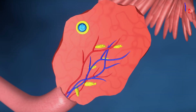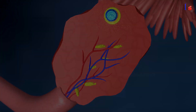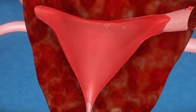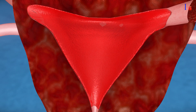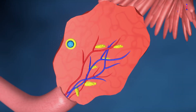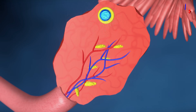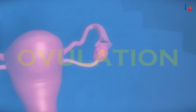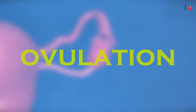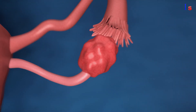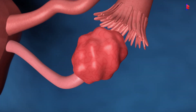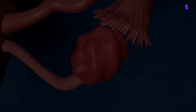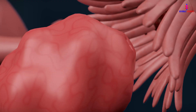In the follicular phase, one of the follicles becomes dominant and continues to grow. These follicles release estrogen, which stimulates the thickening of the uterus lining. As the follicular phase progresses, estrogen levels rise, preparing the body for ovulation.